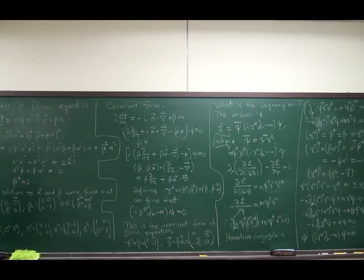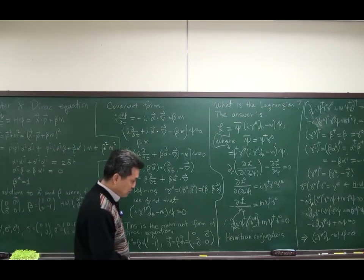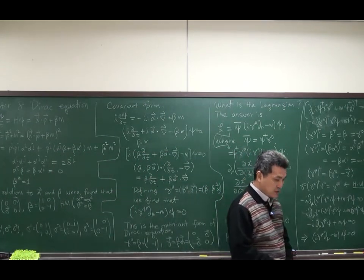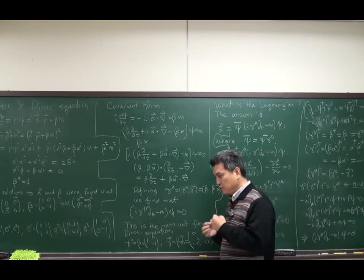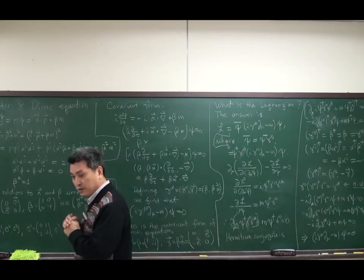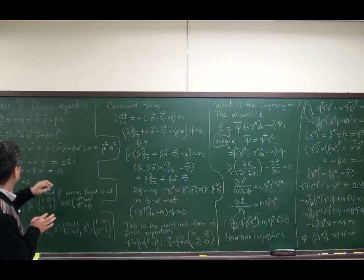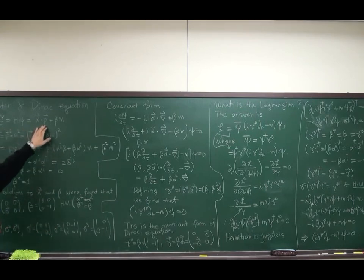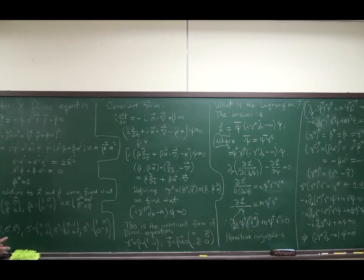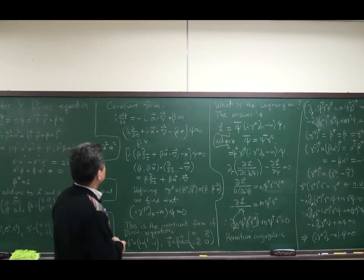Why don't we find covariant form of Dirac equation? Covariant form must be, we must make use of the covariant derivative. You know, we have time derivative and spatial derivative in momentum. So there must be some way to find covariant form.